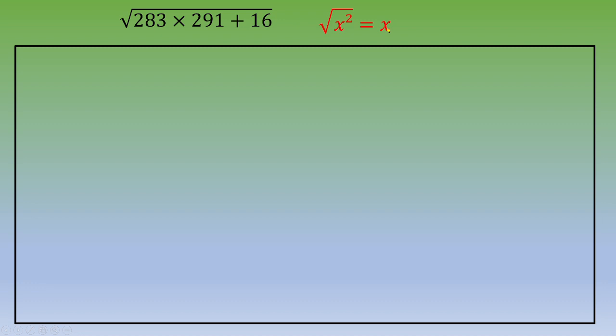So the idea is to transform this quantity into a perfect square. You begin by selecting the last number, 283, and set that x equal to 283.